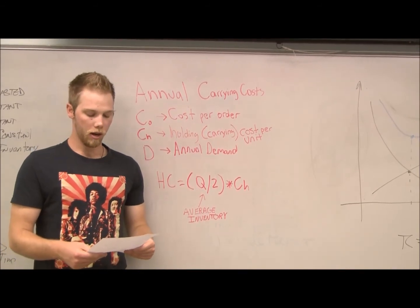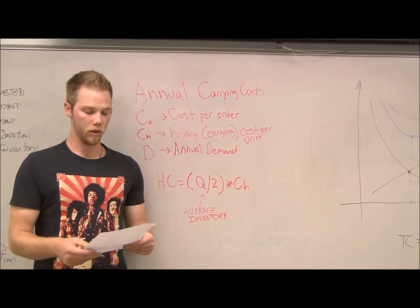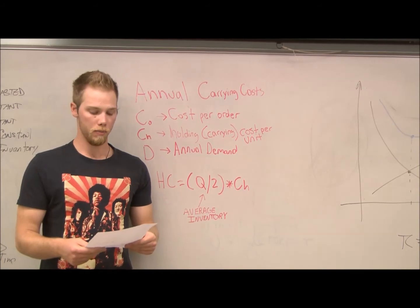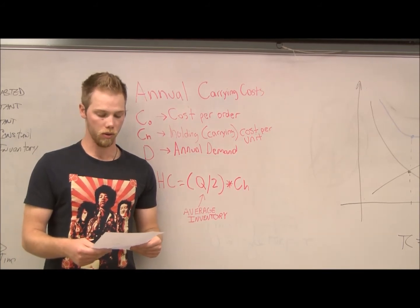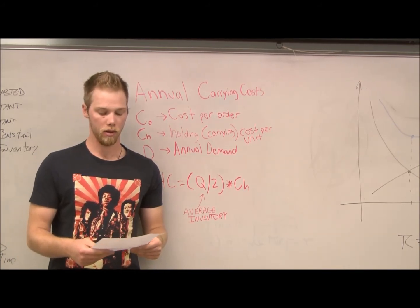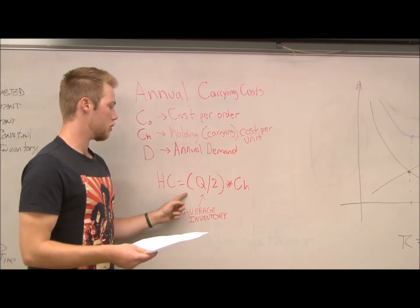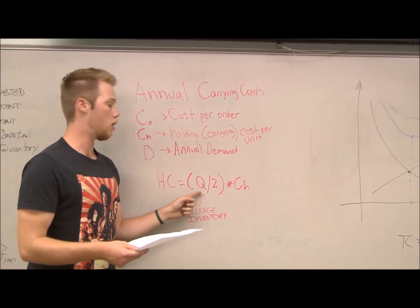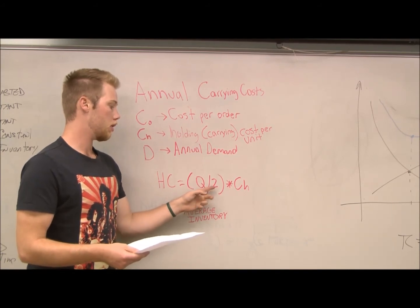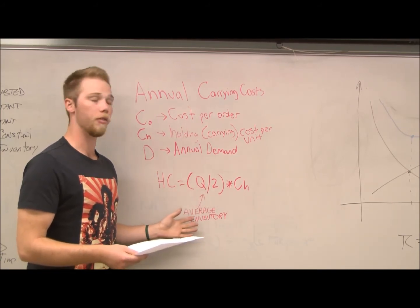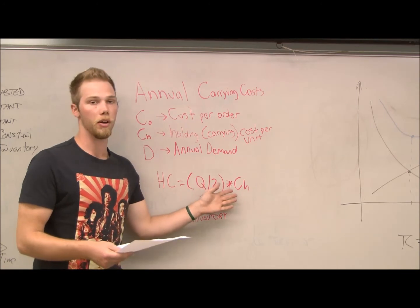Annual carrying costs are the average inventory level multiplied by the per unit cost to hold, or carrying costs. This is indicated by holding costs equals Q, or order quantity, divided by 2. This is also referred to as average inventory multiplied by your holding costs.